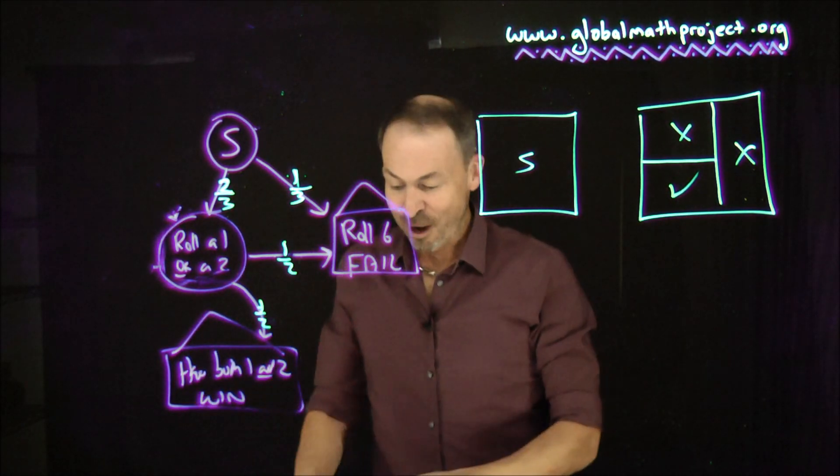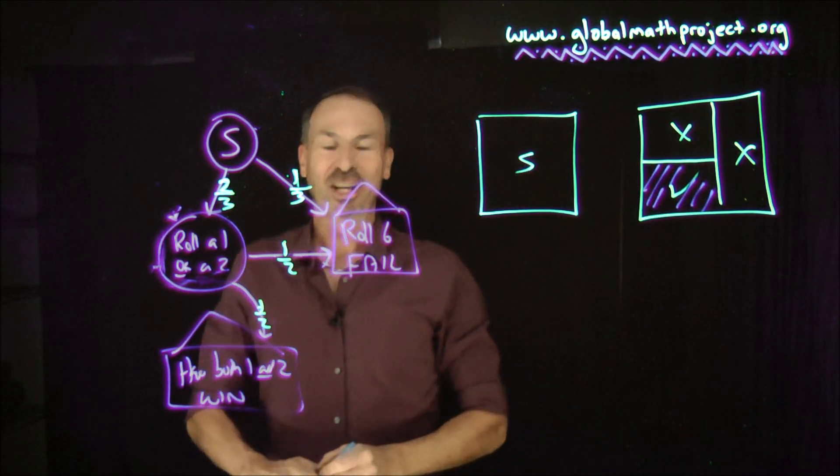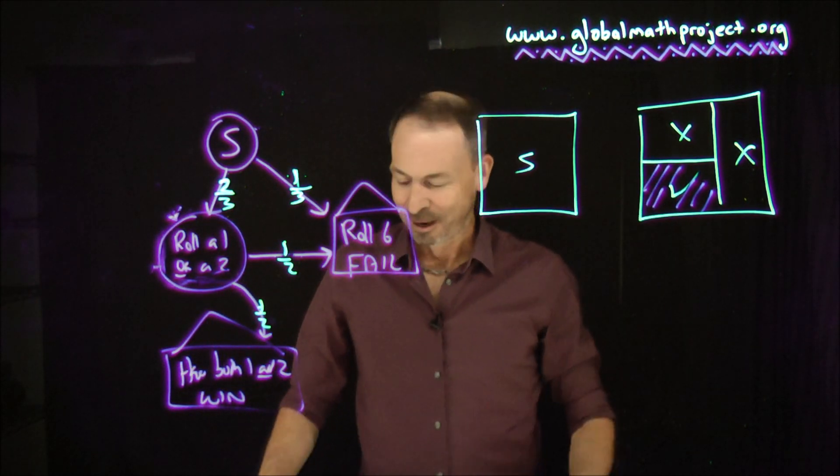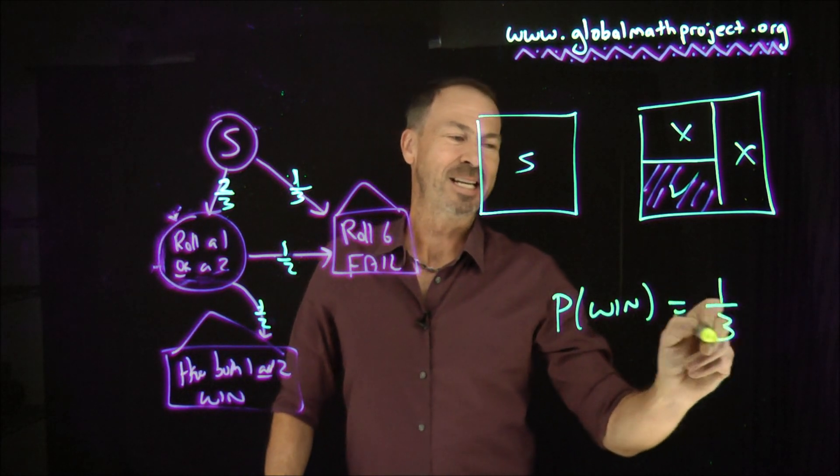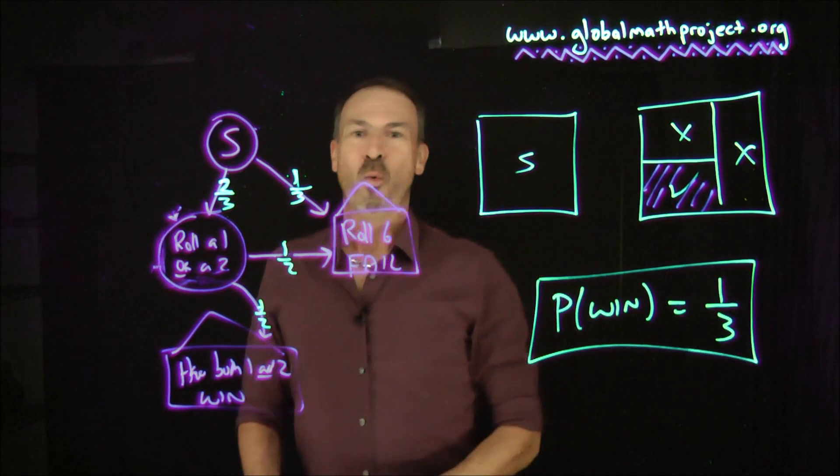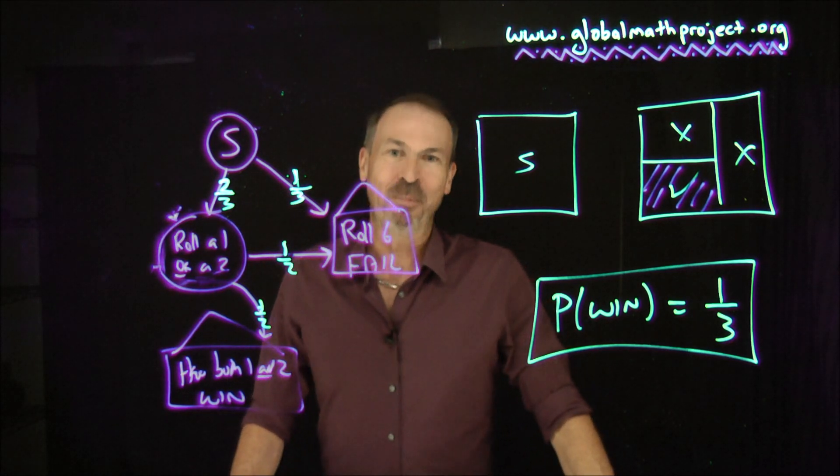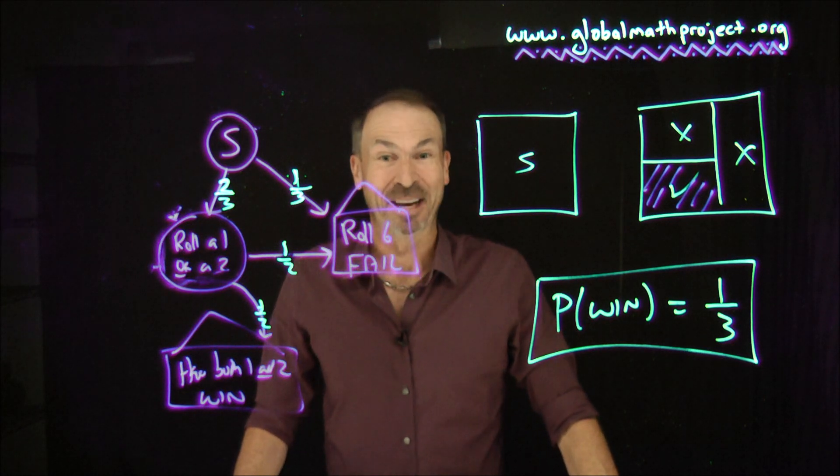That's it. What fraction of people are in the winning state? It's half of two-thirds. Actually, that means one-third of the people. Half of two-thirds is one-third. The probability of winning is half of two-thirds is one-third. One-third of the time, you will roll both a one and a two before you see a six. Wow. That's amazing. We can work that out.